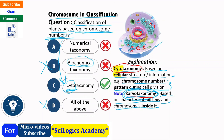Regarding numerical taxonomy, the use of computers is one key feature in taxonomical classification. Just remember the difference between cytotaxonomy and karyotaxonomy.